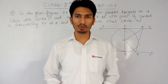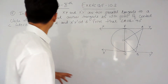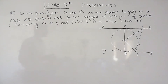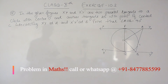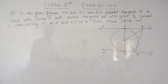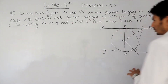Hello everyone, we are from True Maths and in this video we are going to solve question number 9, which is exercise 10.2. The question says: in the given figure, XY and X'Y' are two parallel tangents to a circle with center O, and another tangent AB with point of contact C intersects XY at A and X'Y' at B. We have to prove that angle AOB is equal to 90 degrees.